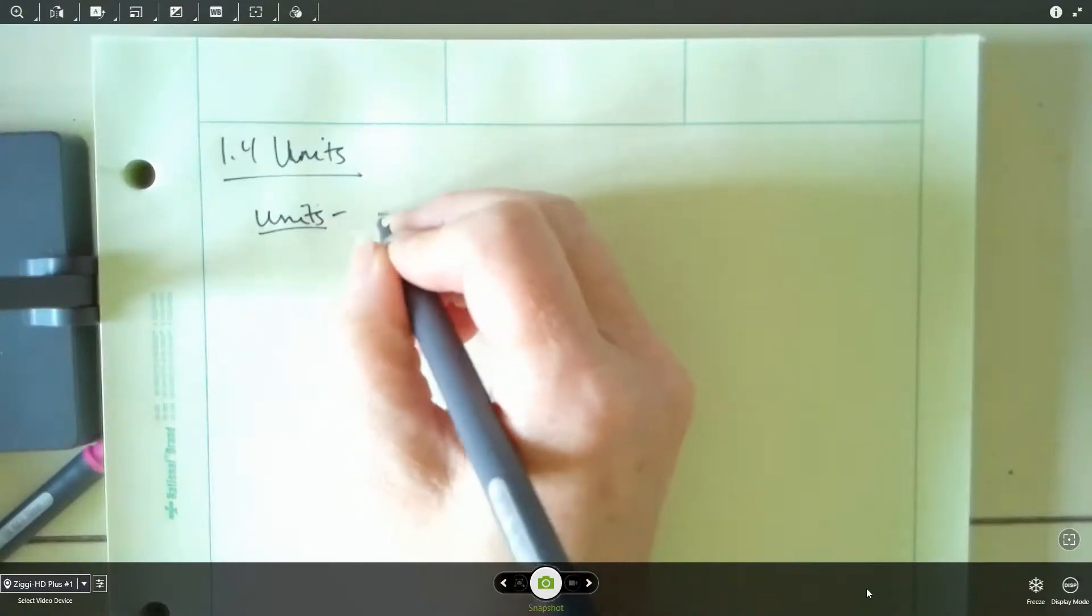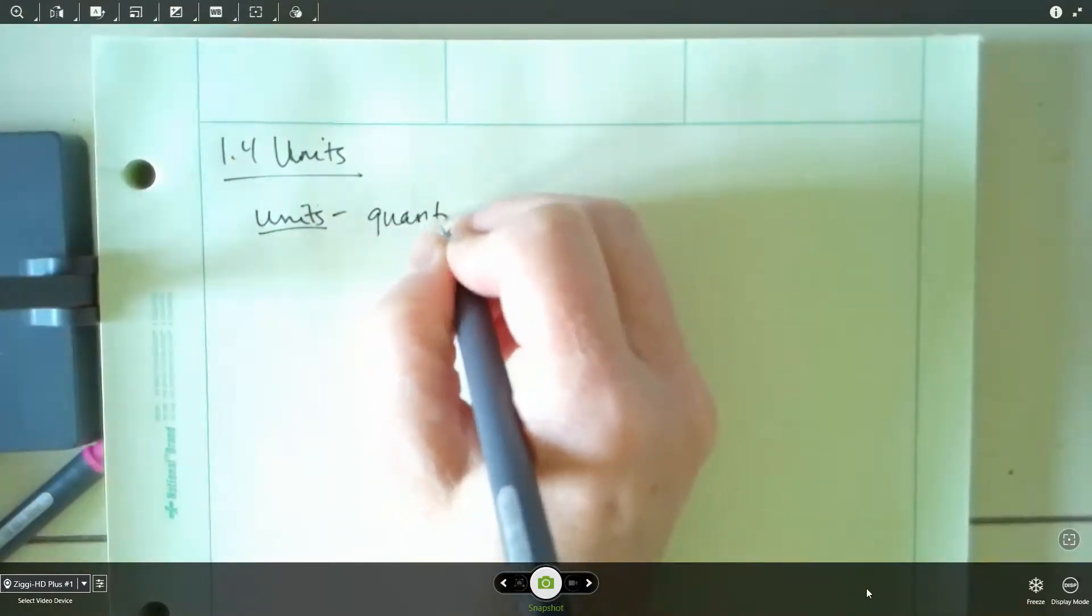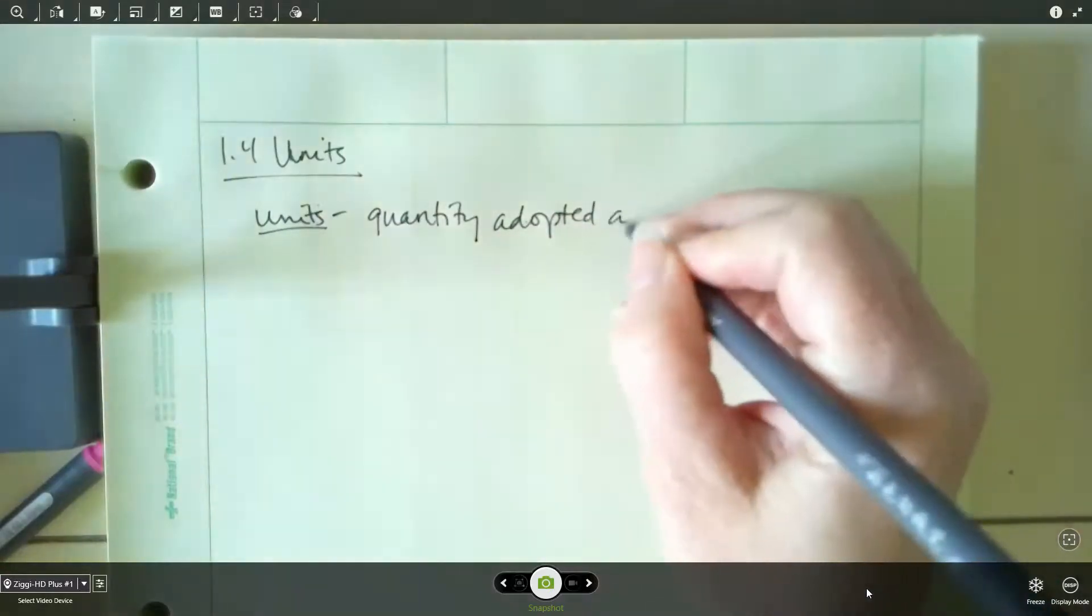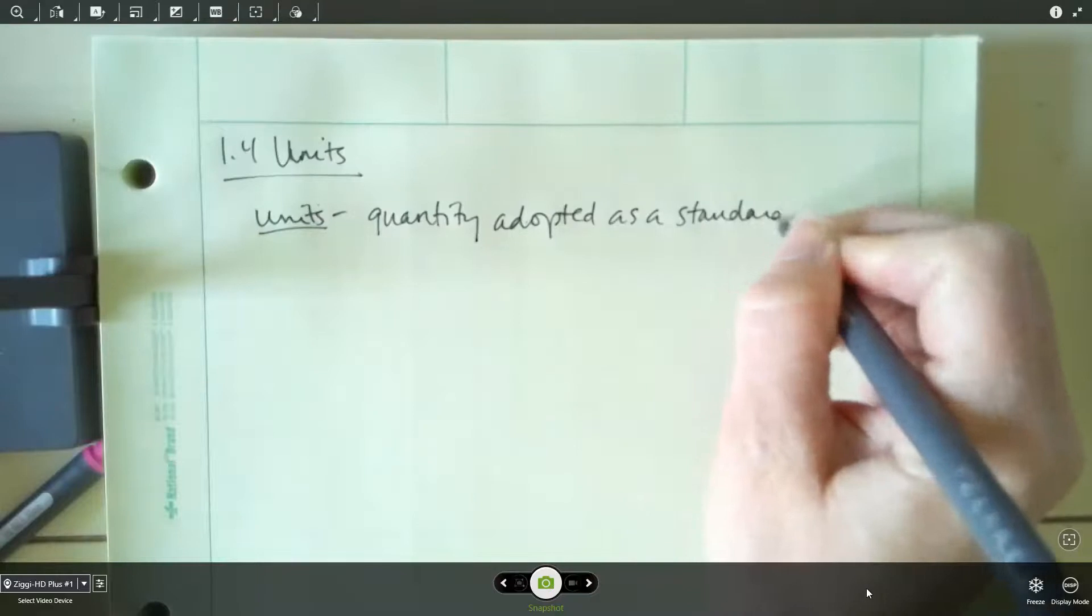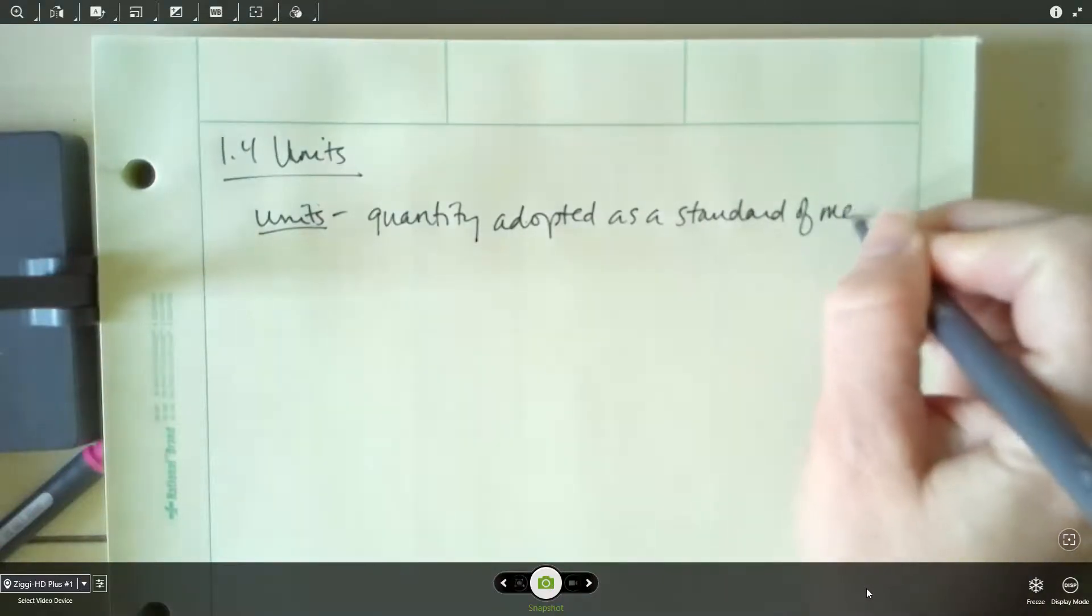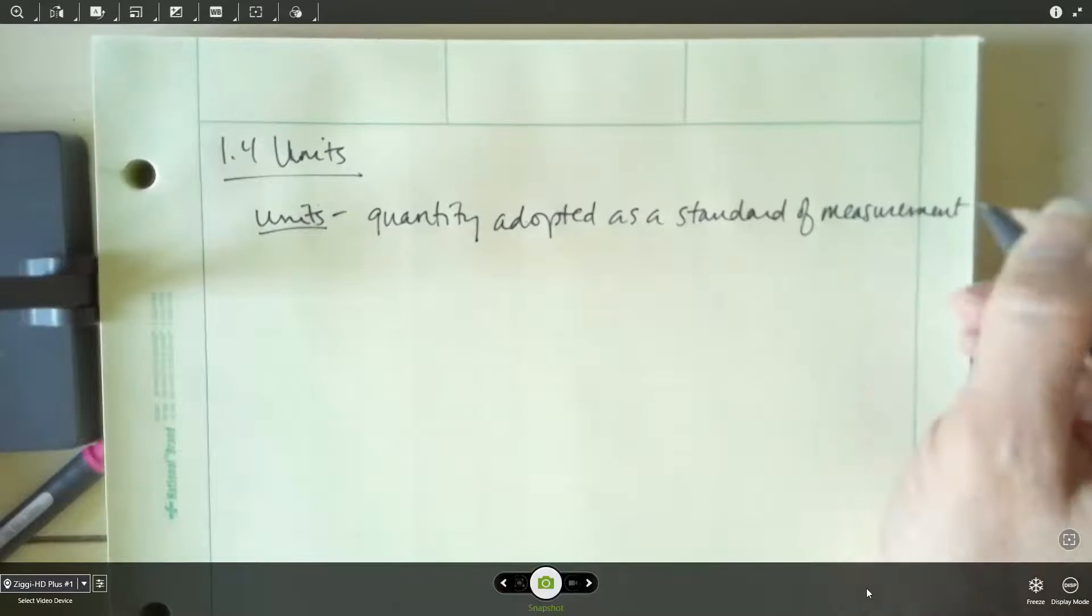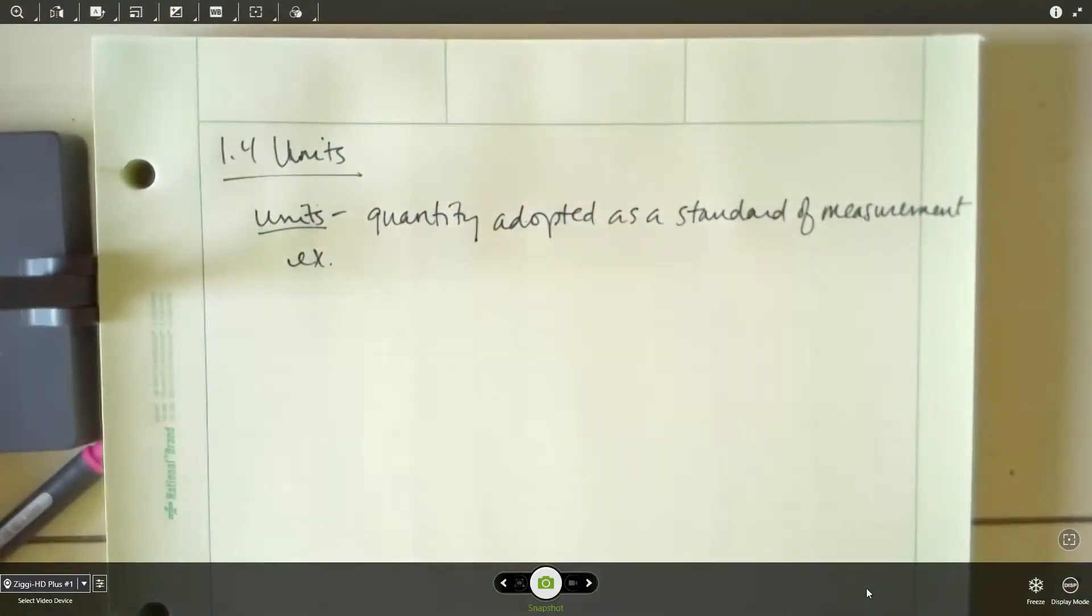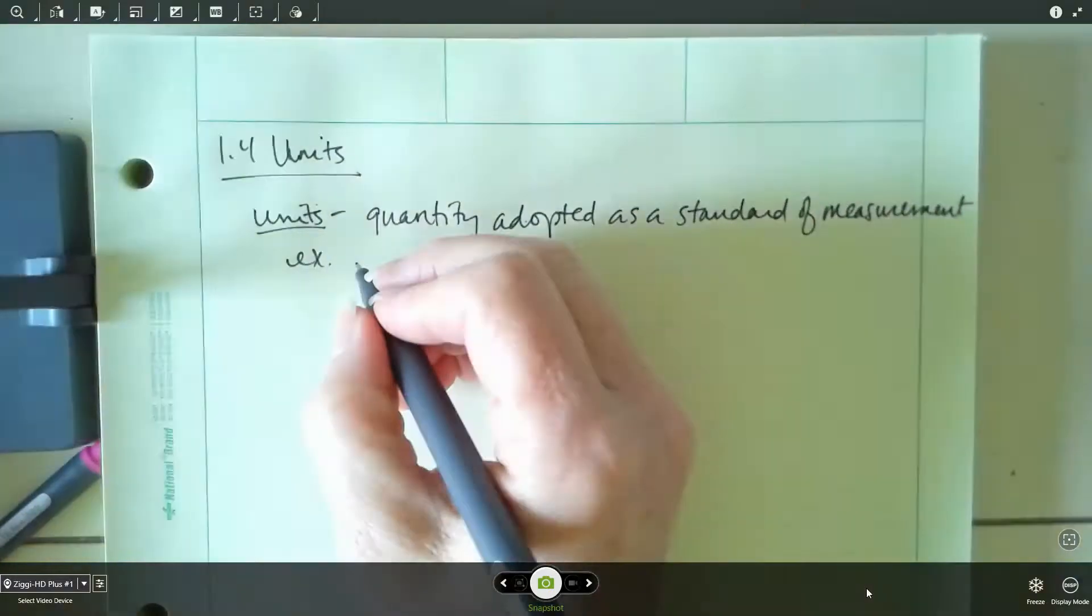So let's define what a unit is. A unit is basically going to be a quantity that's adopted as a standard of measurement. All right, so there are lots of units. Basically, what a unit allows you to do, it allows everybody to have the same standard. So that way, if I say I traveled 10 feet, everybody knows what the distance is for 10 feet. So it just gives everybody a common reference.